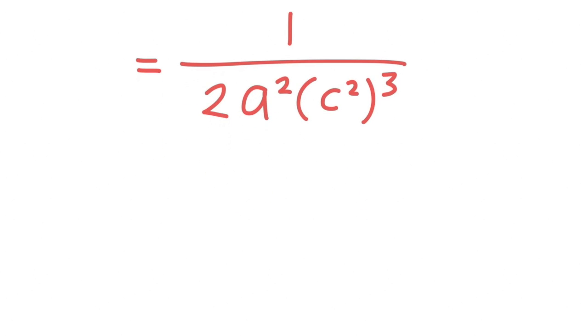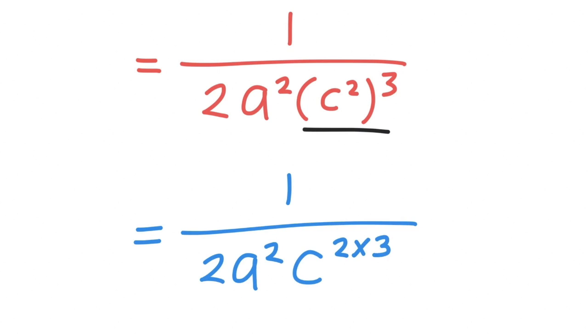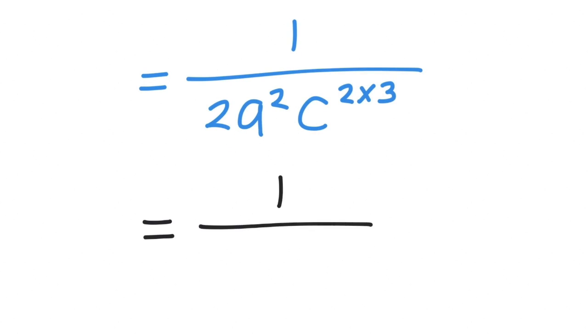Now we already simplified most of the equation, and we only need one more step to simplify it further. Here, we have c squared to the power of 3, which is powers of a power. We can simplify it by applying the powers rule. Then we have 1 over 2a squared times c to the power of 2 multiplied by 3, which equals 1 over 2a squared times c to the power of 6.